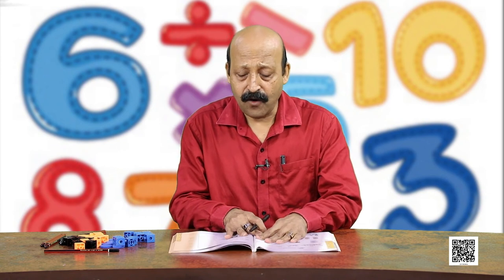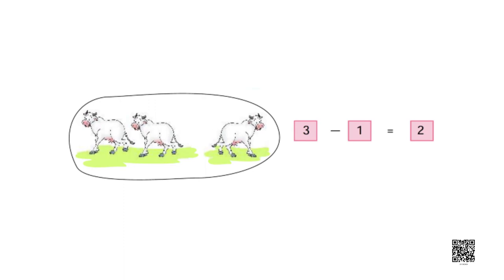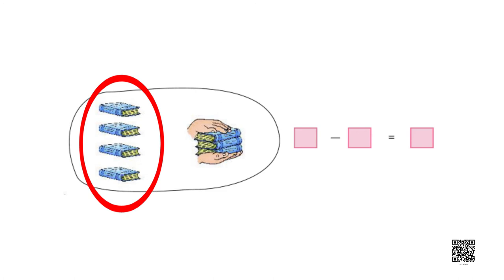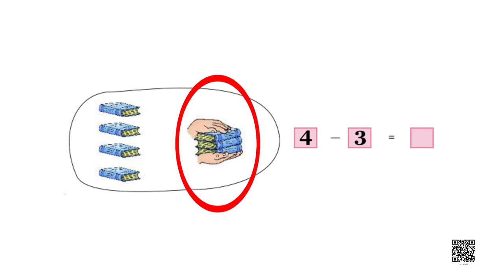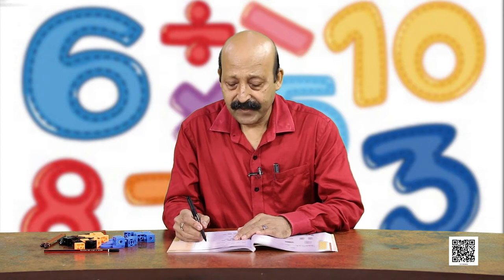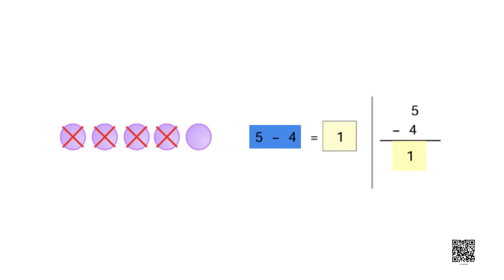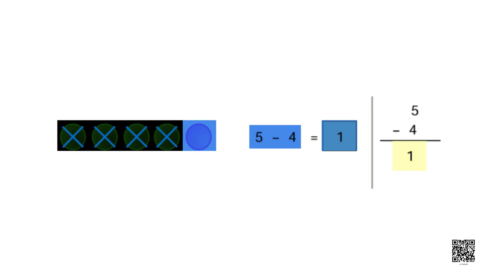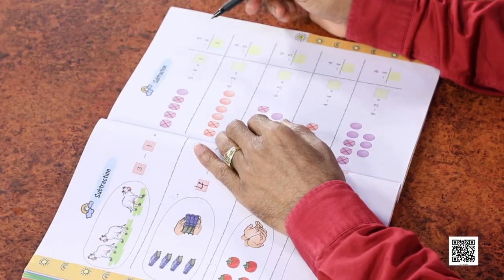There were 3 cows; 1 has gone away, so 2 are left. Here there are 4 notebooks; 3 have been taken away, leaving 1. For 5 minus 4 equals 1: there are 5 objects and 4 have been taken, so 1 is left. We can also write subtraction vertically — one number below the other — and write the result at the bottom. This is another way of writing subtraction.